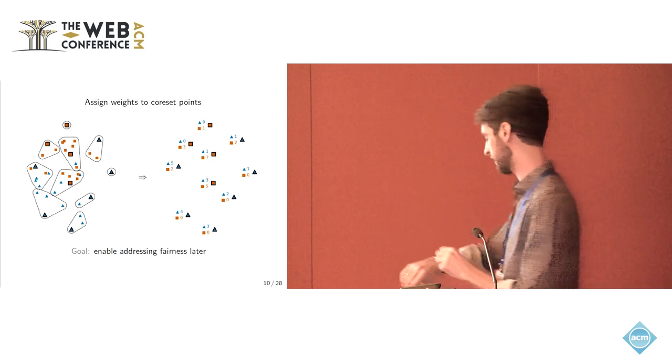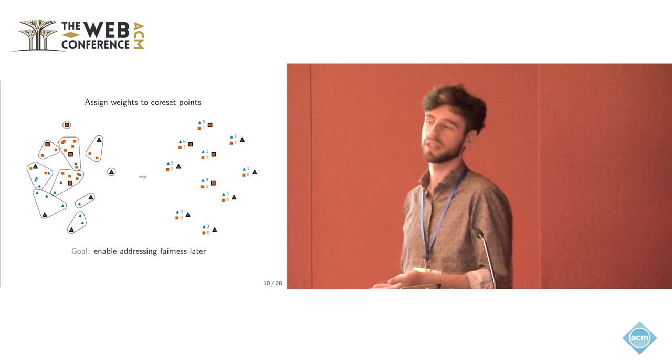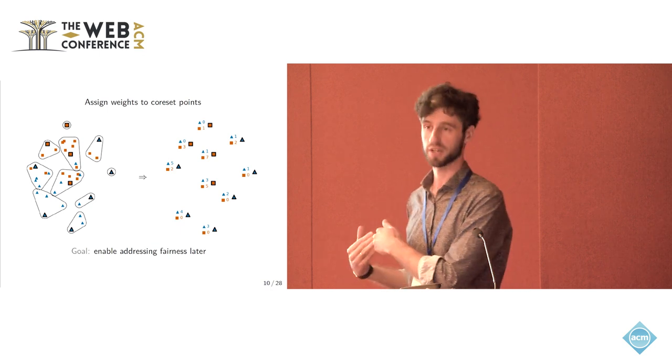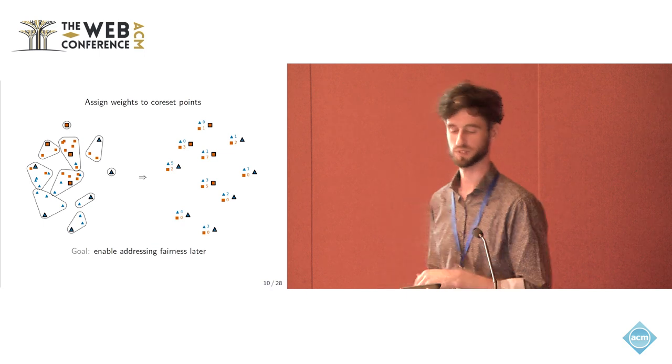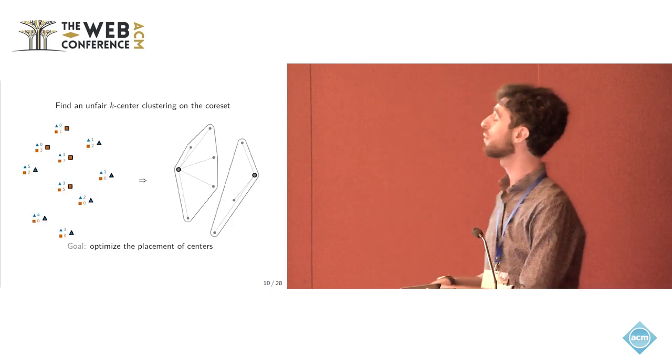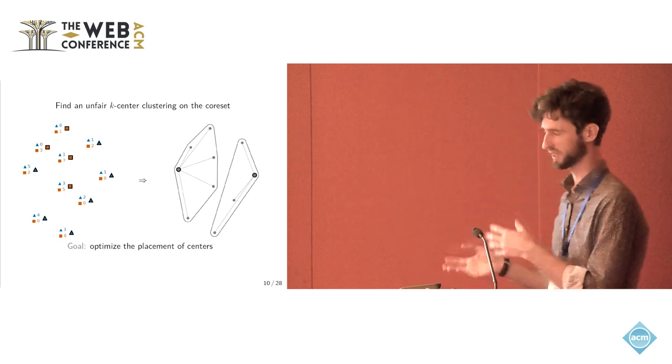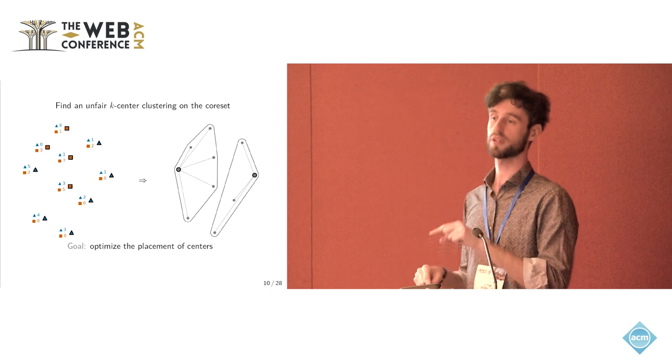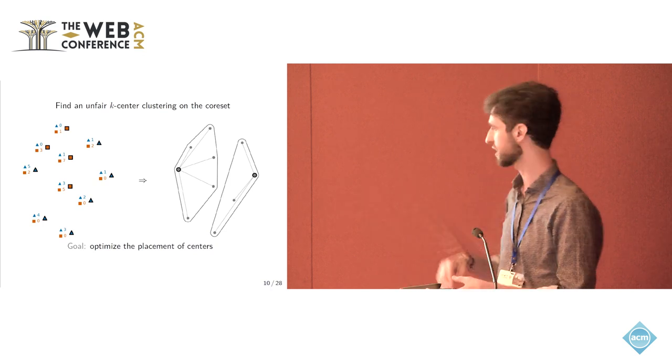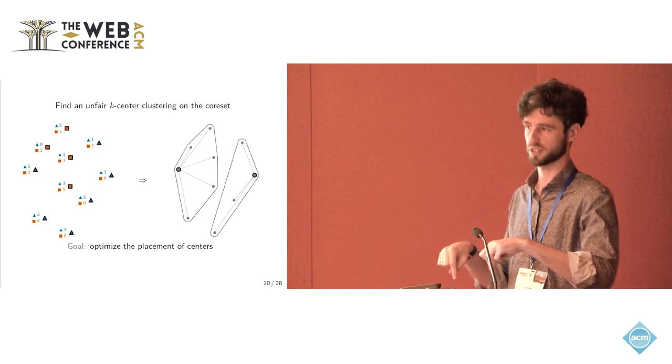So now on the right hand side, we have basically just the core set points with the information about how many original input points they are representing, stratified by color. Now that we compute this information, we throw it away and we just consider the location of points, ignoring the weights for now. And we solve the k center problem. So we look for k clusters, in this case two, just to locate the position of the centers in the core set.